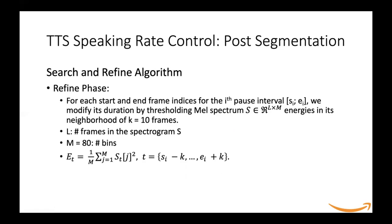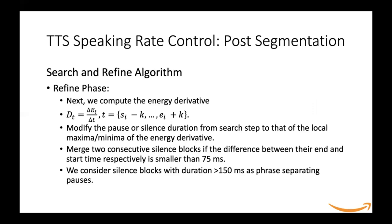We take the start frame from si minus 10 and end the frame at ei plus 10. The energy is computed as mentioned in the equation. We then compute the energy derivative d(E)/dt in that interval and modify the pause or silence duration from the search step to that of the local maximum or minimum of the energy derivative. We merge two consecutive silence blocks if the difference between their end and start time is smaller than 75 milliseconds, and consider silence blocks with duration greater than 150 milliseconds as phrase-separating pauses. All these durations were identified after examining the dataset.